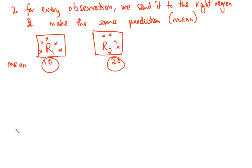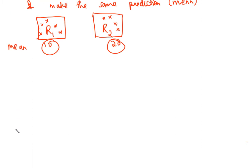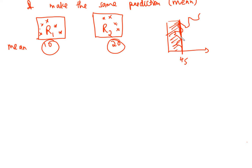A question arises: how do we create these regions? In theory, the regions could have any shape, but it is easier if we have high-dimensional rectangles or boxes for simplicity and ease of interpretation. Like previously, if everyone with years less than 4.5 gets a certain salary, a straight line is much easier to interpret than a wiggly boundary.